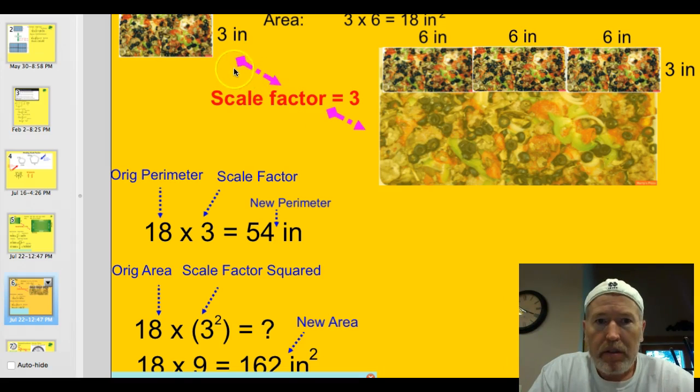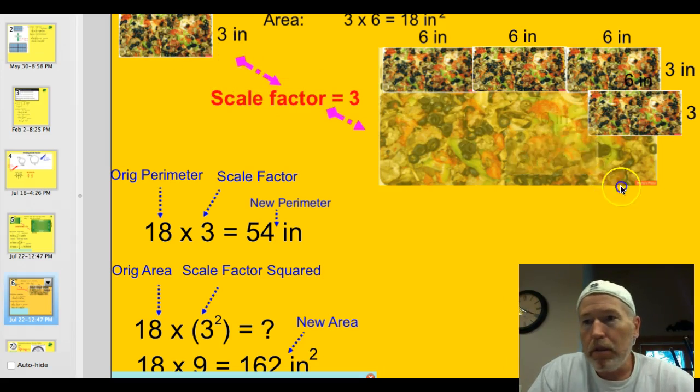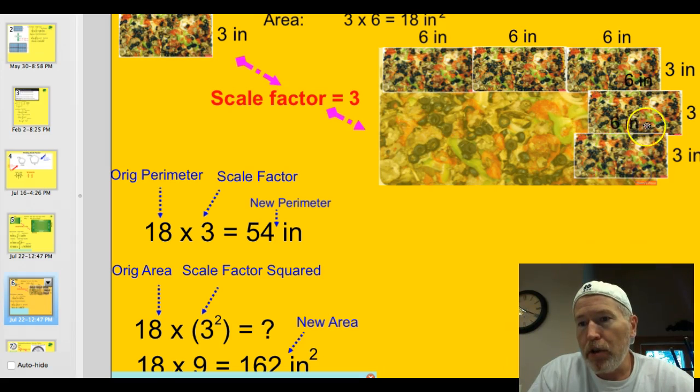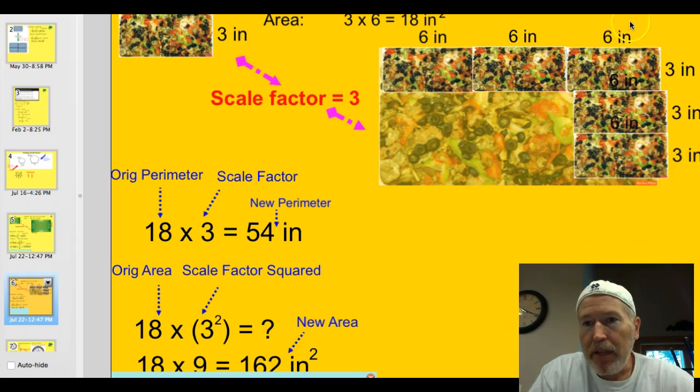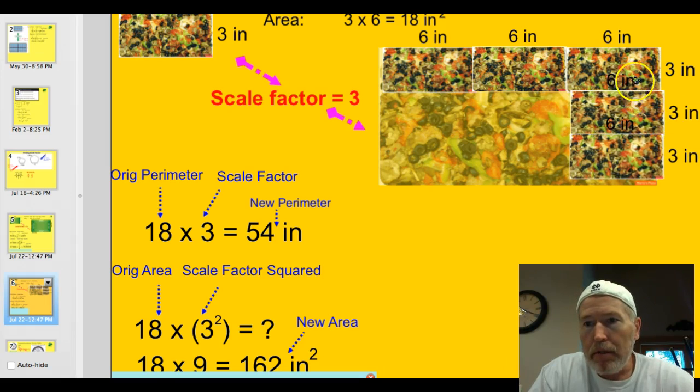Just a couple more seconds. It's coming soon. And we could determine our perimeter there. So we're going to have 18 on this side. And we're going to have 9 on this side. And if we double those, add them all up, you'd have 54 inches as your perimeter.